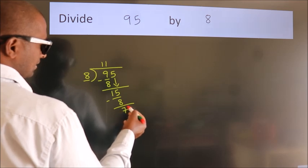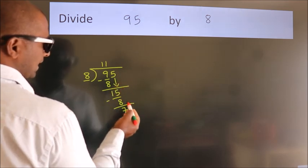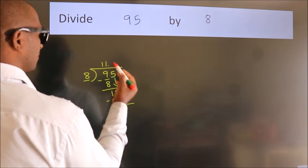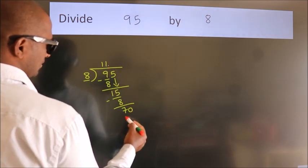After this, no more numbers to bring down. So what we do is we put a dot and take 0. So 70.